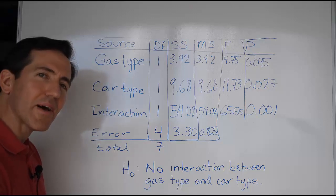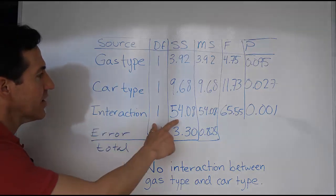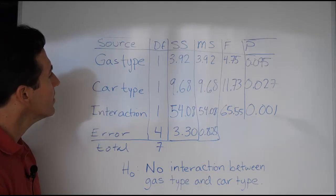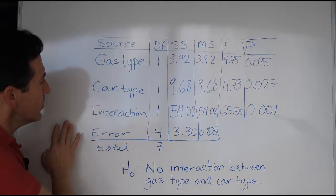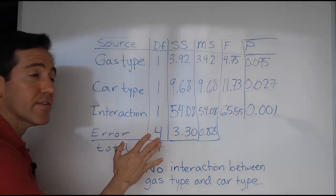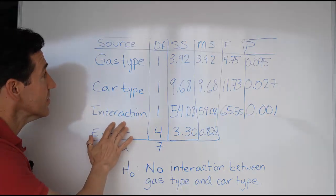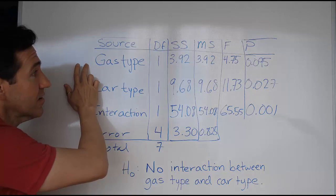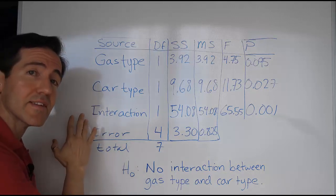Hi guys, this is a quick video about testing the interaction effect in a two-way ANOVA. The first thing you want to do when analyzing this ANOVA table is to look at the interaction effect to see if it's significant. If it is significant, then we shouldn't test for main effects. We should look at them together, not separate, not in isolation.